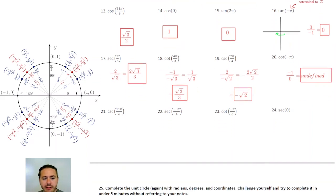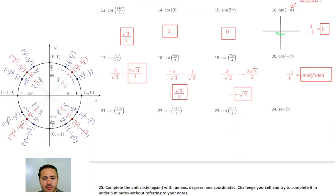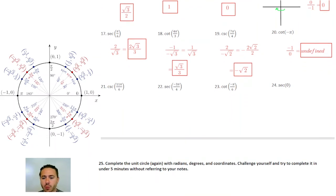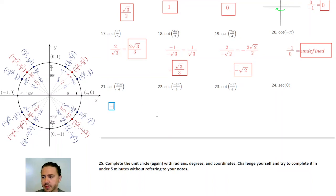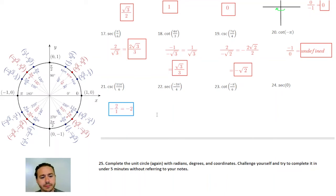Cosecant of 11π over 6 is the reciprocal of sine, so we look at the y-coordinate and flip the fraction. At 11π over 6 the y-coordinate is negative 1/2, so the reciprocal is negative 2 over 1, which is just negative 2.